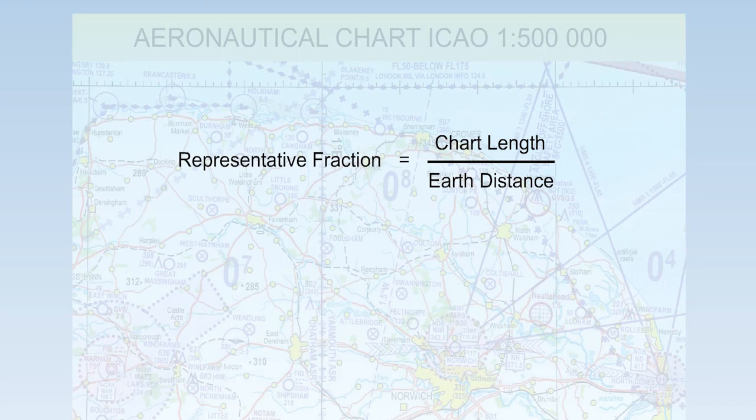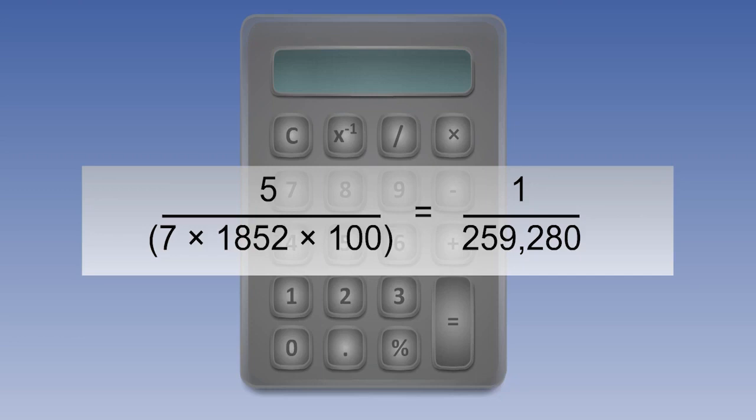All calculations can be solved by initial substitution into the basic formula. We always want our representative fraction to finish up with the numerator as 1. A method which will allow you to enter all this onto your calculator in one stage and which will work for any calculator is to evaluate the denominator first and then divide by the numerator. The answer comes out as the denominator of the representative fraction and you then have to write it down as 1 over the number on your calculator.